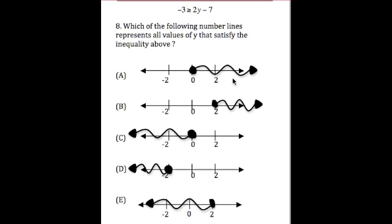I'm actually just going to write it down first. Let me click on the pen and then I'll show you how to solve it. So we've got -3 ≥ 2y - 7.